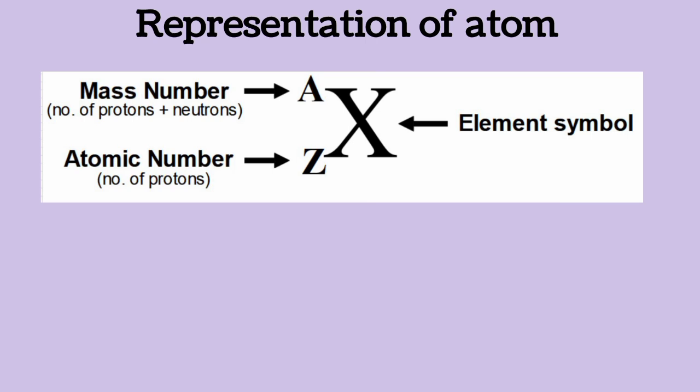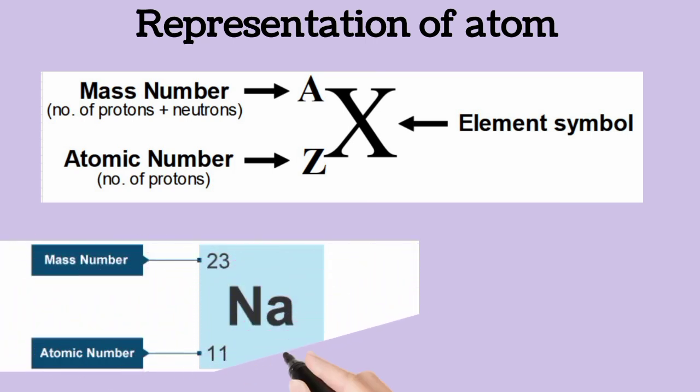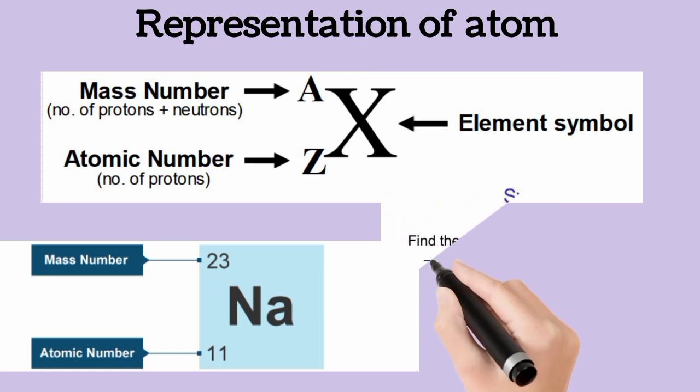For a typical example, Na here represents the symbol of the element sodium. The mass number of sodium is 23, while the atomic number is 11. Since the atomic number is 11, the number of protons is also 11.